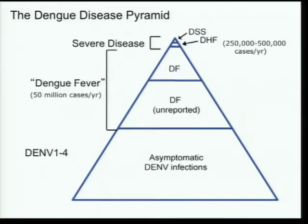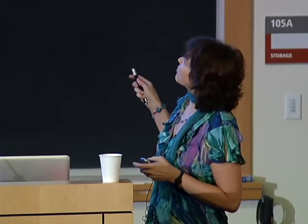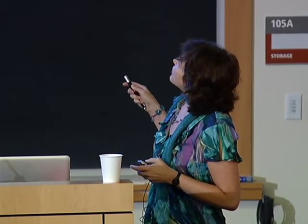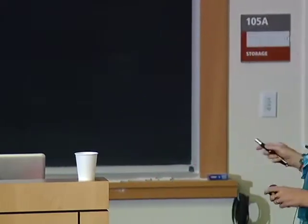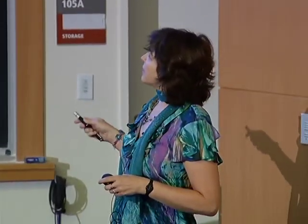Dengue is an RNA virus transmitted by mosquitoes — two species in particular, Aedes aegypti and Aedes albopictus, which are highly adapted to human habitat. This has become a really huge problem over the last three or four decades as it has expanded from classic dengue fever into dengue hemorrhagic fever and shock syndrome (DHF/DSS). The big problem is a huge burden of about 50 million cases a year, and a scary syndrome of plasma leakage which can kill children within 24 to 48 hours.